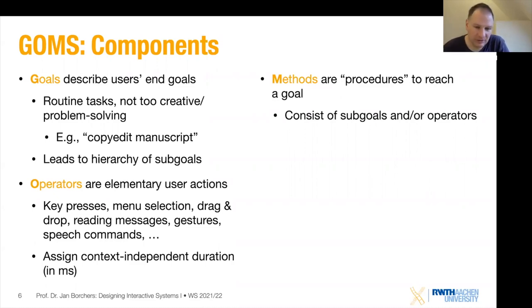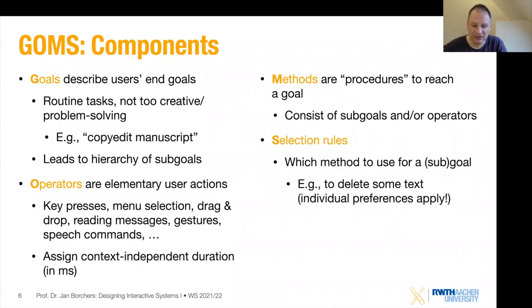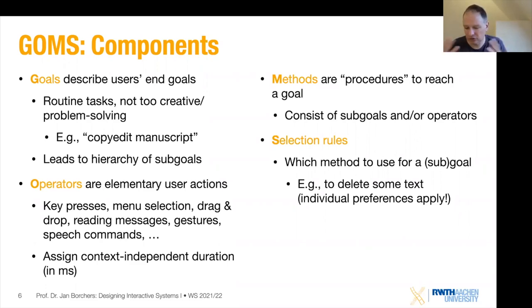Sometimes there are many ways to reach a target. To delete a word, I could delete every character individually, or highlight it and press delete once — two different options. From the GOMS model perspective, I need to figure out what the different alternatives are and how long each takes. Then I write a selection rule specifying which method is used for that sub-goal. There will be individual preferences, but we look for average performance and apply likelihoods — for example, people use one method 30% of the time and the other 70% of the time.